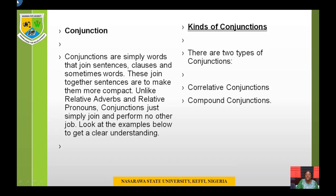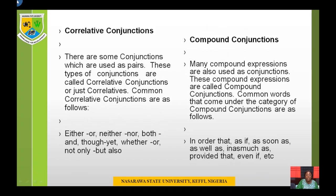Kinds of conjunctions: there are two types. We have correlative conjunctions and compound conjunctions. Correlative conjunctions are conjunctions used as pairs. Common correlative conjunctions are: either/or, neither/nor, both/and, though/yet, whether/or, not only/but also. These are correlative conjunctions because they are used together.